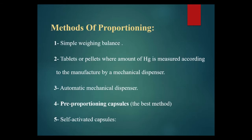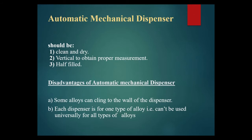Methods of proportioning. Simple weight balance: tablets or pellets where the amount of mercury is measured according to the manufacturer by a mechanical dispenser. Automatic mechanical dispenser. Pre-proportioning capsules — the best method of proportioning. Self-activated capsules. The automatic mechanical dispenser should be clean, dry, and vertical to obtain proper measurement, and half-filled.